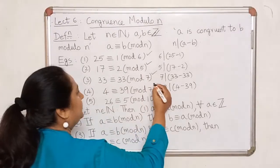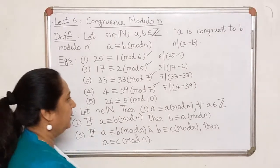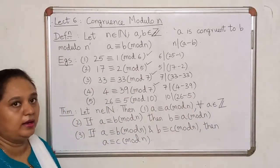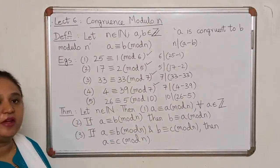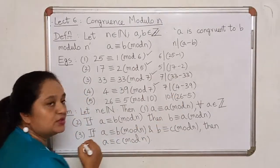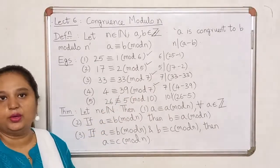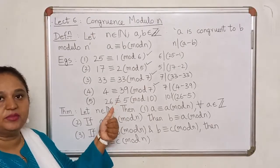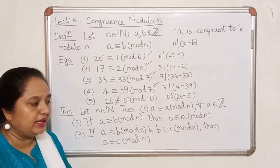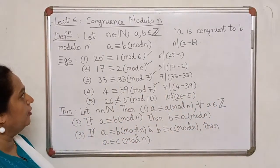What about the last one: is 26 congruent to 5 mod 10? Let's check — does 10 divide 26 minus 5? There is a problem: 26 minus 5 is 21, and 10 does not divide 21. Therefore 26 is not congruent to 5 modulo 10. This notation with a slash through the congruence symbol indicates that something is not congruent. These simple examples should be enough to explain the definition of congruence modulo n.